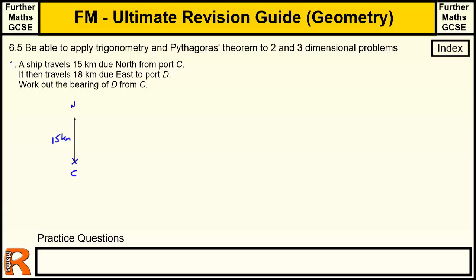And then we're going to go due east to port D. So that was D, I'll label that in a second. This is going to be port D over here. So that's port D. And we've got to work out the bearing of D from C. So we've got to work out, if we were going straight to D from C, what would the bearing be? Now bearings are measured clockwise from north, so we're trying to work out that angle. So we know that's 15, we know that's 18 kilometers.